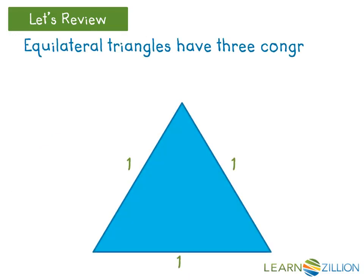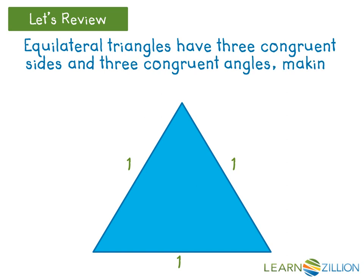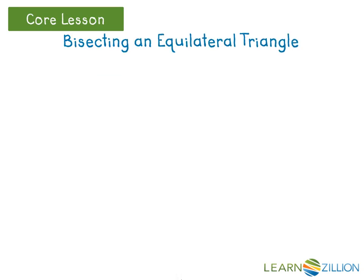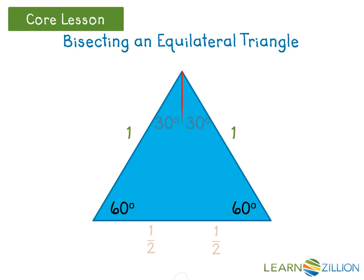Equilateral triangles have three congruent sides and three congruent angles, making them 60 degrees each. To bisect an equilateral triangle, all you have to do is draw in an altitude from one of the vertices. This cuts the triangle into two congruent 30-60-90 triangles.